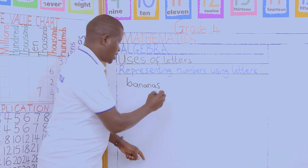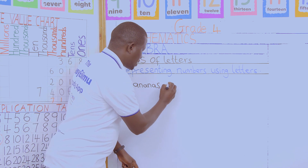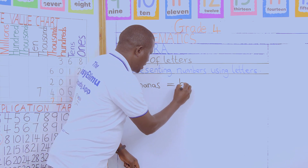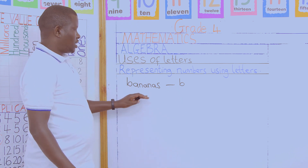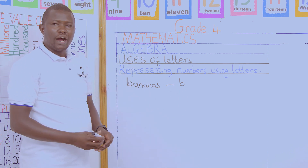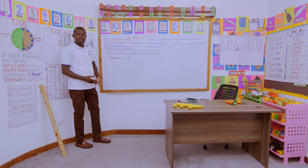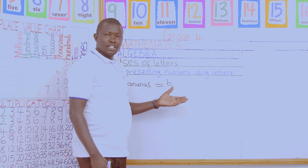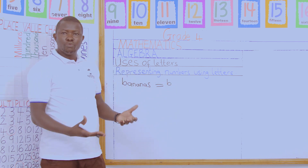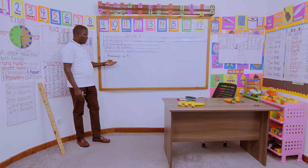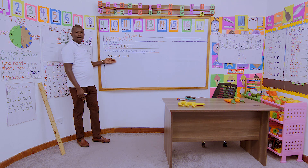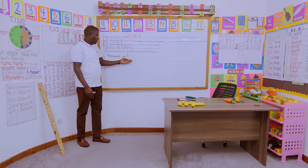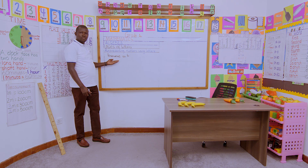For example, we have bananas and I want us to represent these bananas using the letter B for banana. So if you are asked how many bananas do you have, we are using letters to represent objects. Bananas can be represented using letter B, so B is standing for bananas.